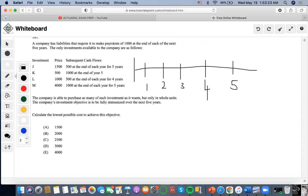The problem says the company wants to make payments of a thousand right now. They give us all these investments to finance these cash flows, and the company is able to purchase as many of each investment as it wants, but only in whole units.